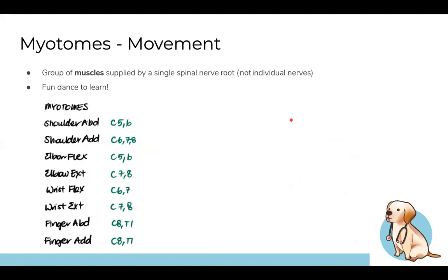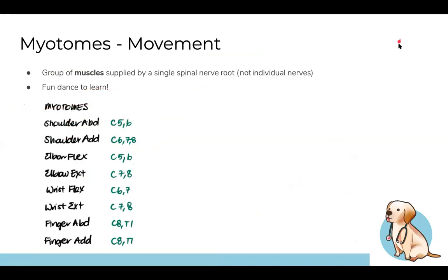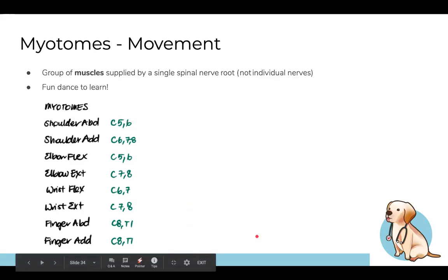Myotomes: a group of muscles supplied by a single spinal nerve. These tell you what each spinal root is responsible for motorically. A fun way to memorize the myotomes is a movement-based mnemonic dance: 'five-six, six-seven, eight, five-six, seven-eight, six-seven, seven-eight, eight-one, eight-one' — repeating it while performing the corresponding movements helps it stick.